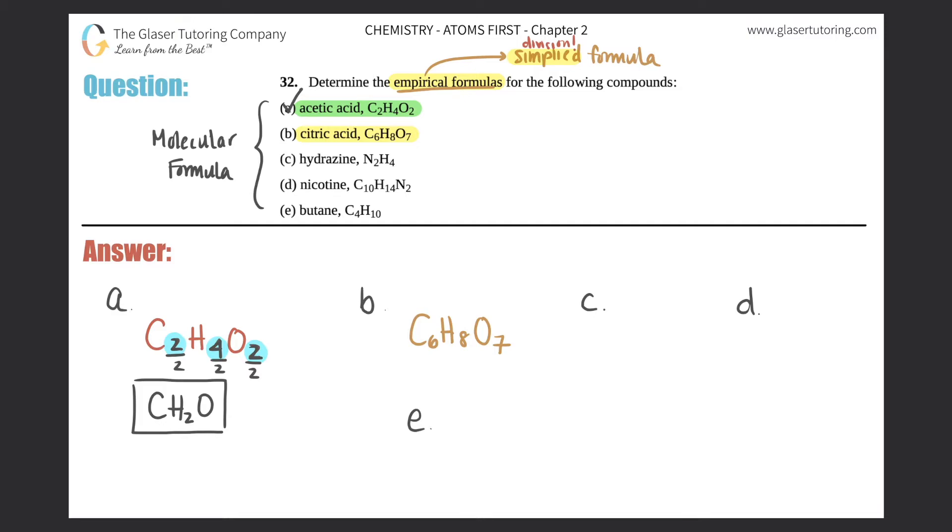C6H8O7 - let's see, can we turn this molecular formula into an empirical formula? I have six carbons, eight hydrogens, and seven oxygens. Is there a number between six, eight, and seven that I can divide each one by to get a lower whole number?